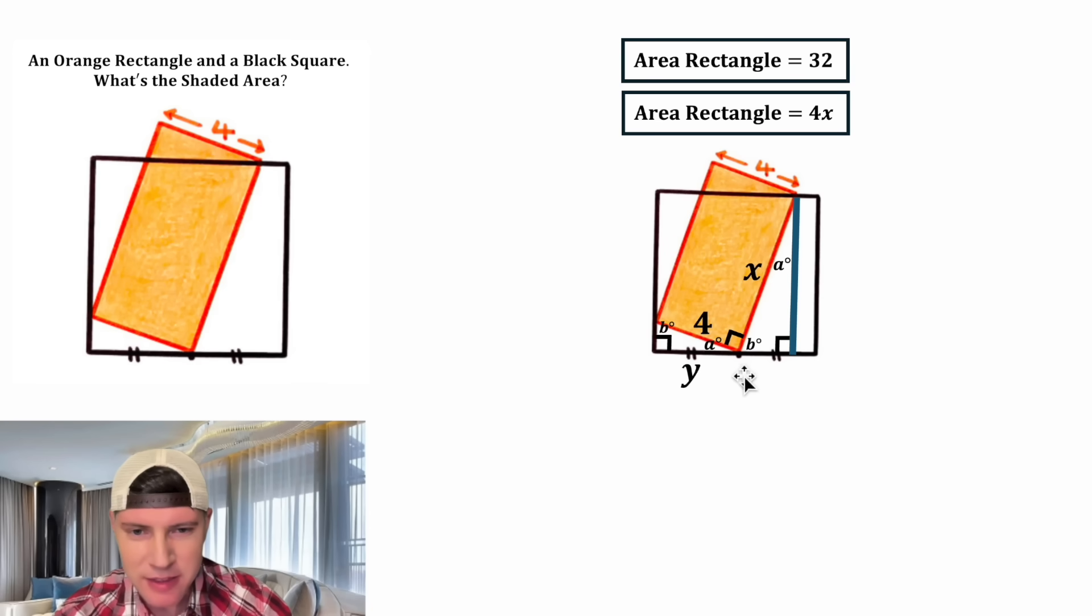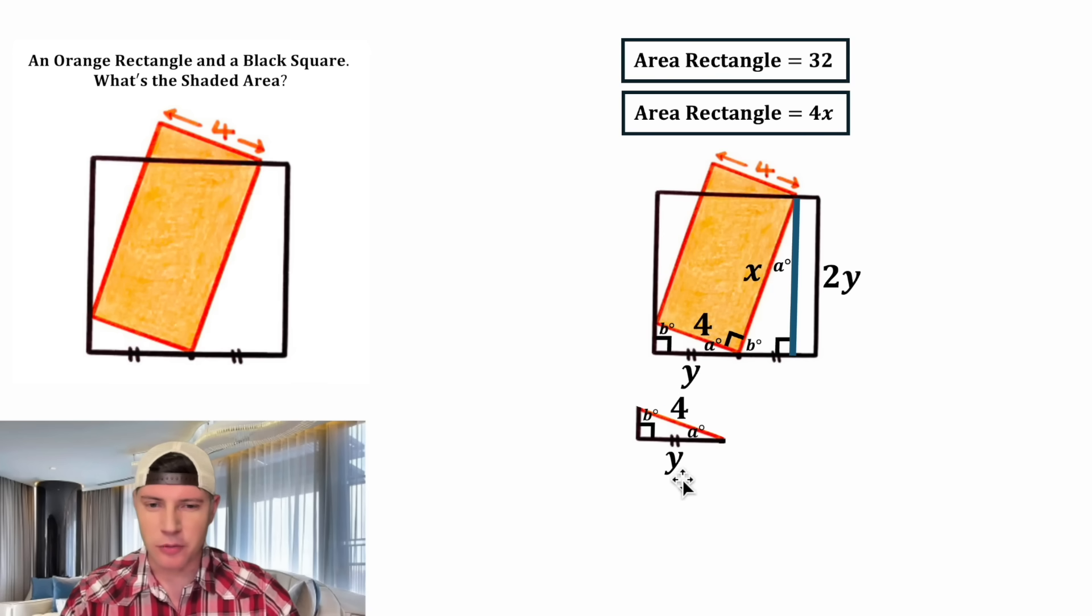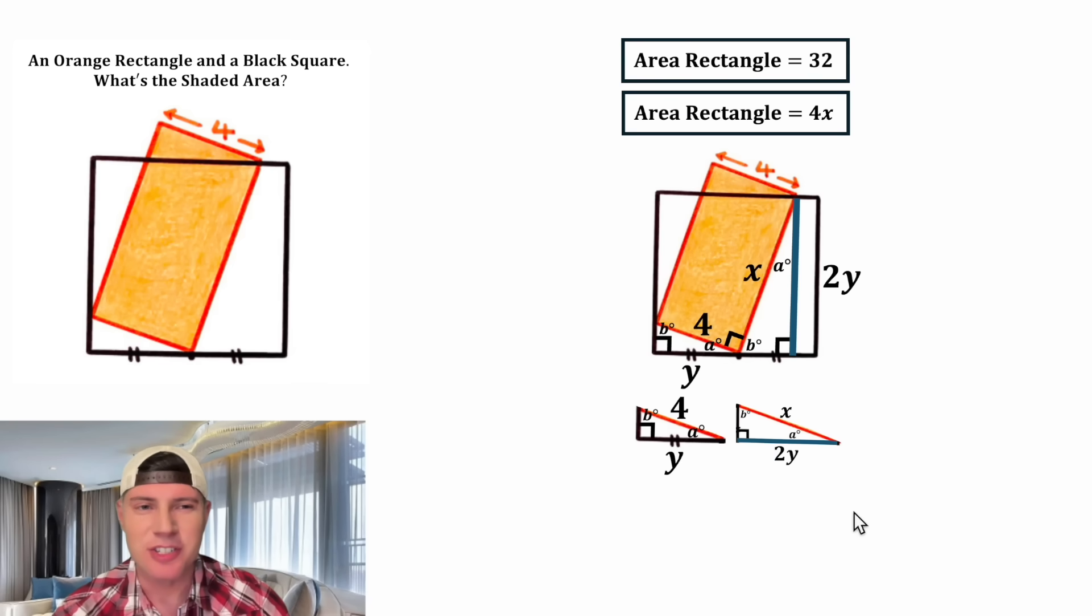Let's label this distance to this point here y, and that would make the entire base 2y, and the height would also be 2y. Now let's focus on the two triangles. Let's copy this one down and scoot it over, and let's copy this one down and rotate it. Since these two triangles are similar, we can write a proportion. We can do hypotenuse over bottom equals hypotenuse over bottom. It'd be 4 over y equals x over 2y.